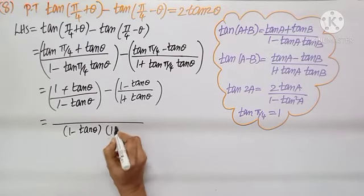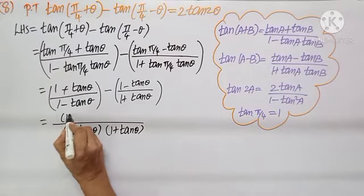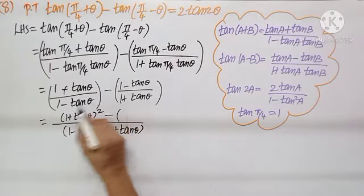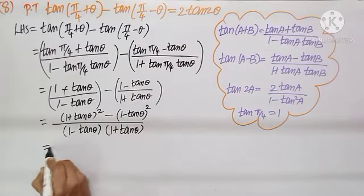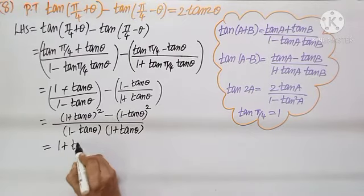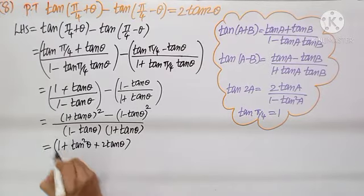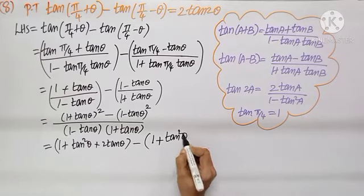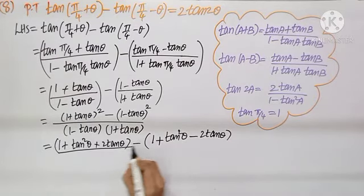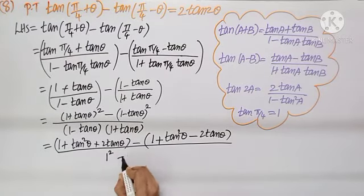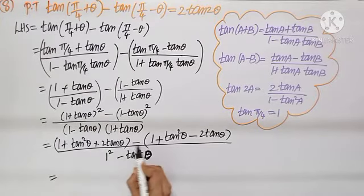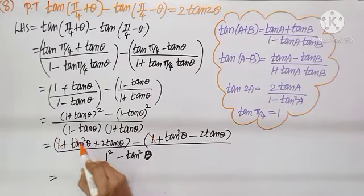Substituting tan(π/4) equals 1, we get: 1 plus tan θ by 1 minus tan θ, minus 1 minus tan θ by 1 plus tan θ. Taking LCM, which is the product 1 minus tan θ into 1 plus tan θ, and cross multiplying: 1 plus tan θ whole squared is 1 plus tan²θ plus 2 tan θ. The denominator is a plus b into a minus b, which is a² minus b². We get a minus symbol, and then 1 and 1 cancel, and tan squared terms also cancel.